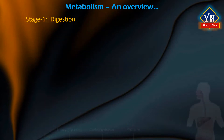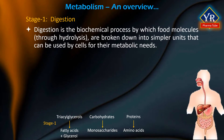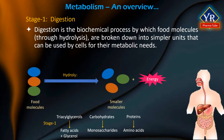Stage 1: Digestion. Digestion is the biochemical process by which food molecules through hydrolysis are broken down into simpler chemical units that can be used by cells for their metabolic needs. Simply, digestion is the process of breakdown of food material into small molecules. It entails the physical grinding, softening and mixing of food as well as enzyme-catalyzed hydrolysis of carbohydrates, proteins and fats.